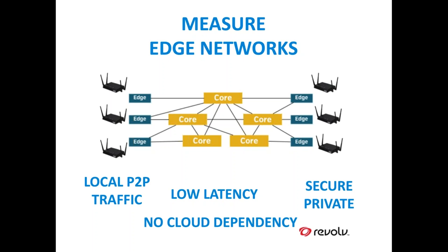This is also important from a security and privacy standpoint: if you keep data local with very little going out to the internet, the risk of breaches and intrusions is much reduced. One good candidate for this is the OpenWRT stack, which is used in almost all IoT gateways being developed today and a large number of home routers from Linksys and others. It's an open source framework, making it easy to contribute to and extend with measurement capabilities.